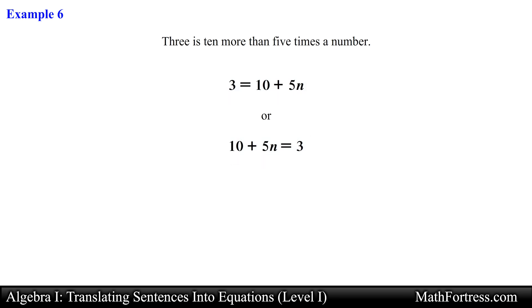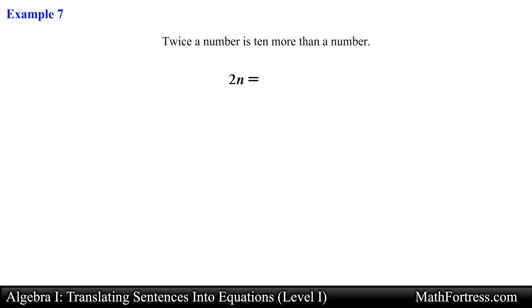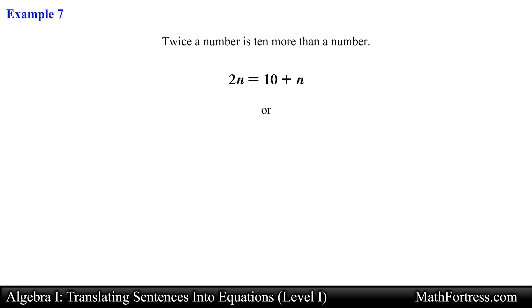Some sentences describe equations with variables on both sides of the equal sign: 'Twice a number is 10 more than a number.' We first write 2n, followed by an equal sign because of the keywords 'twice' and 'is,' then the sum of 10 and n. We can also write this equation by switching the expressions from either side of the equal sign.